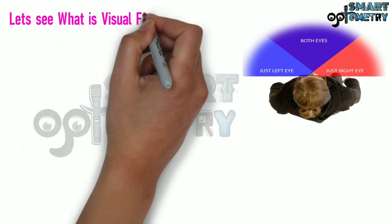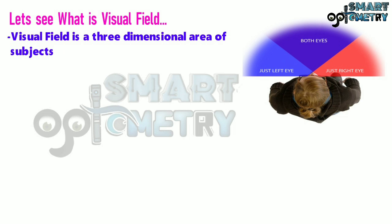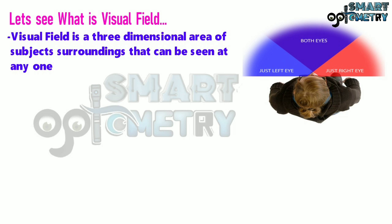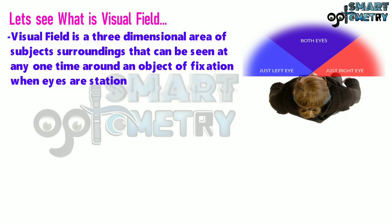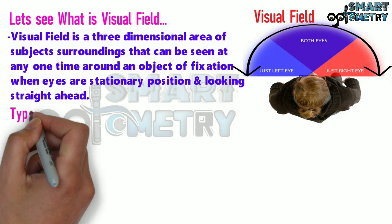Let us see what the visual field is. The visual field is a three-dimensional area of a subject's surroundings that can be seen at any one time around an object of fixation, when the eyes are in a stationary position and looking straight ahead. This is the visual field.